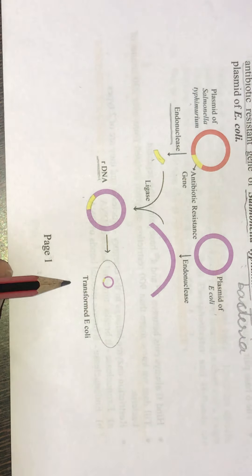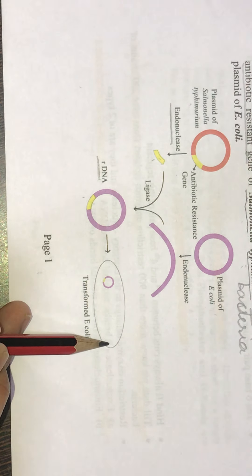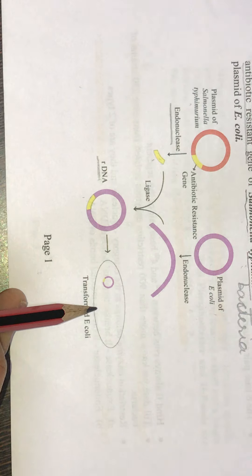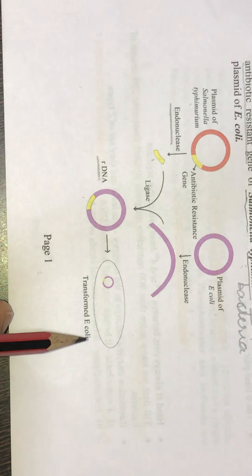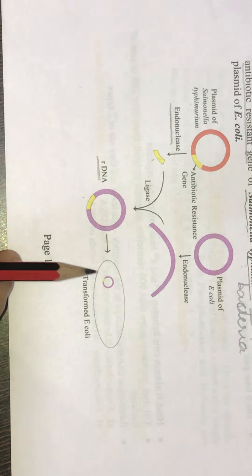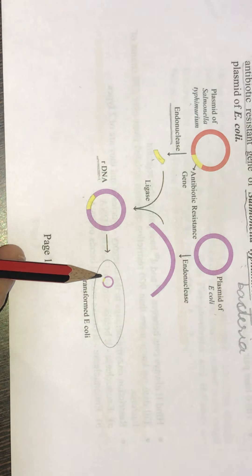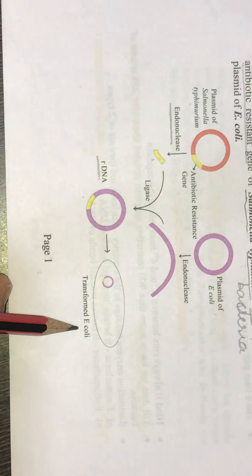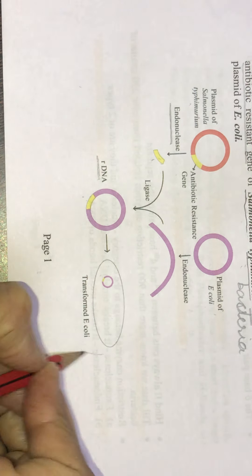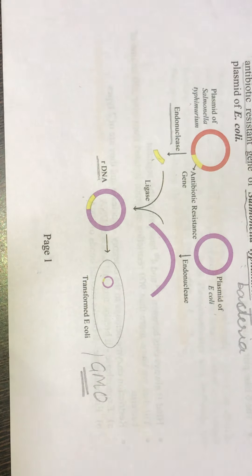This plasmid is transformed into E. coli, so it is called a genetically modified organism. Earlier the plasmid was only the purple color; now there is a yellow gene introduced into it. This is known as transformed E. coli, or GMOs — genetically modified organisms.